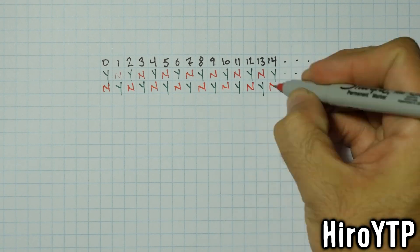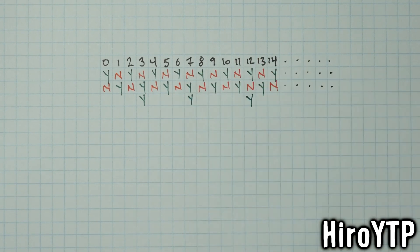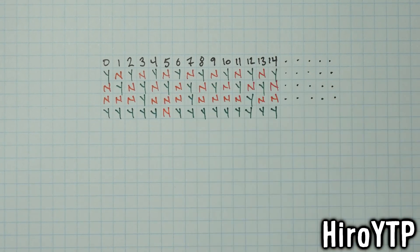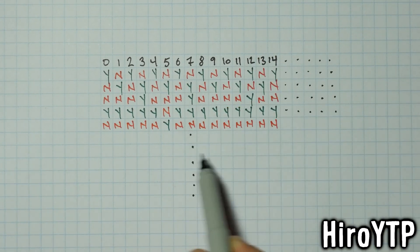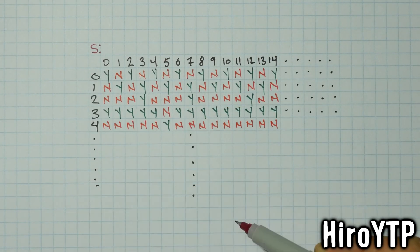Numbers, numbers — 3, 7, 12. Number 5, number 5, 1, 1. Numbers in aleph null.